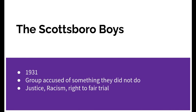The Scottsboro Boys — this was a trial that happened in 1931. This group of African-American boys were on a train and were accused of something they did not do. This trial has to do with justice, racism, and the right to a fair trial. These boys were treated differently because of their skin color. That is an important trial we're going to dig deeper into on the webquest.